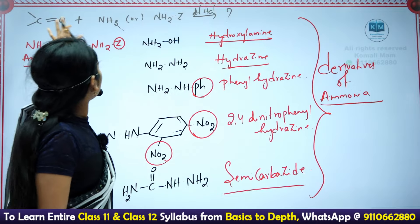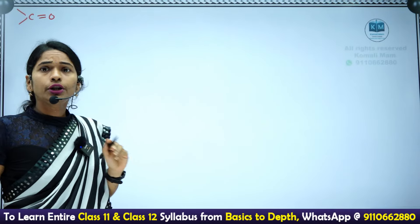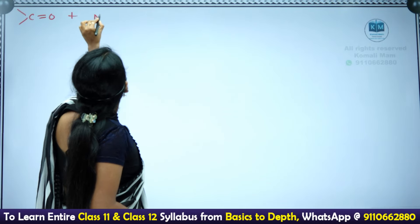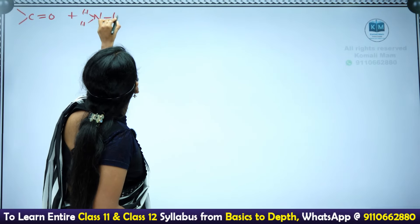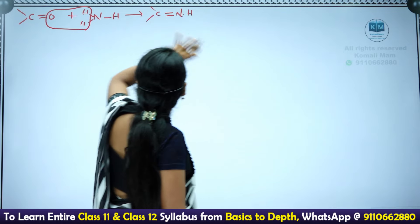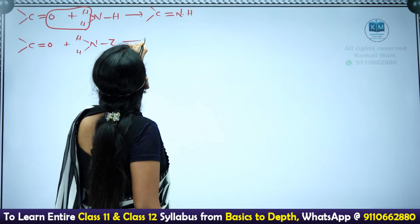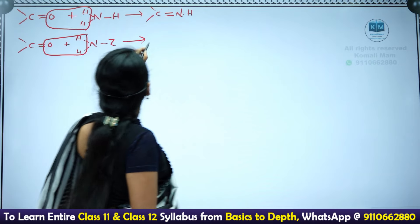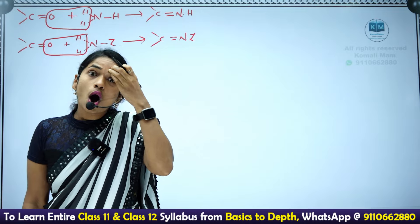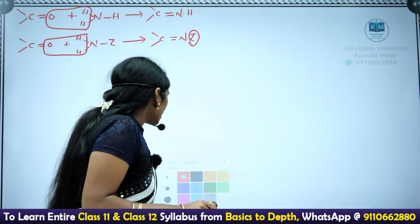What you are going to learn is how all these derivatives react with carbonyl compounds. The simple trick is: from ammonia (NH3), remove two hydrogens, and from the carbonyl compound remove the oxygen, then put a double bond - giving C=N-Z. For any ammonia derivative, remove the two hydrogens and the carbonyl oxygen and write C=N-Z, replacing Z with whichever derivative group you have.